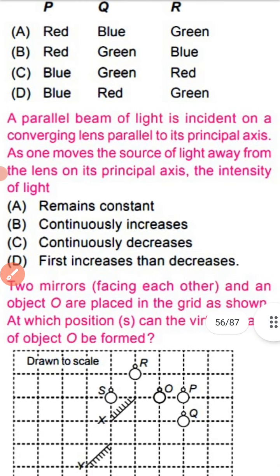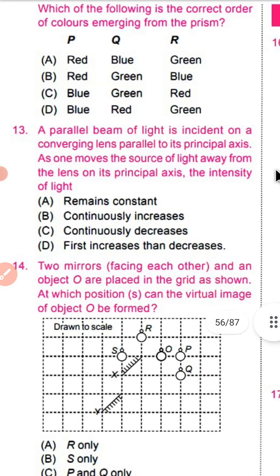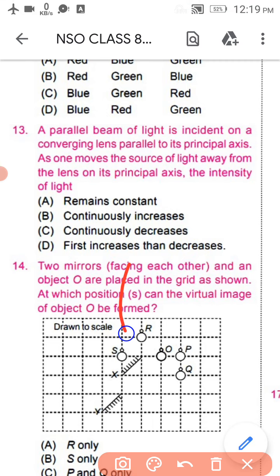Now come to question number 13. A parallel beam of light is incident on a converging lens, parallel to its principal axis. As one moves the source of light away from the lens along its principal axis, the intensity of light will not depend on this refractive medium, so it will remain constant throughout its motion. Option number A is the correct option.